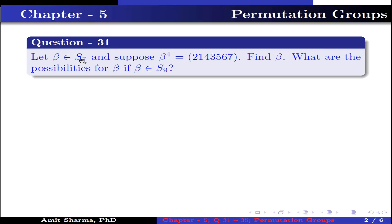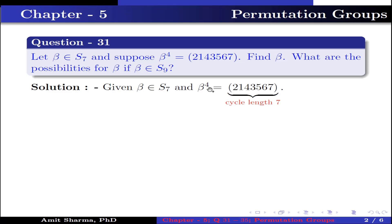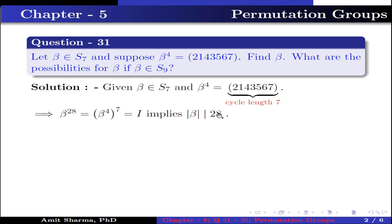Question number 31: Let beta belong to S7 and suppose that beta to the power 4 is a permutation (2, 1, 4, 3, 5, 6, 7). Find beta. Given beta belongs to S7 and beta^4 is a 7-cycle. This implies beta^4 raised to the 7th power is identity, which equals beta^28. This implies the order of beta divides 28.